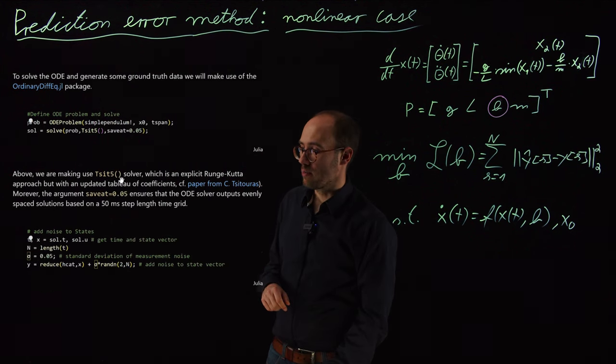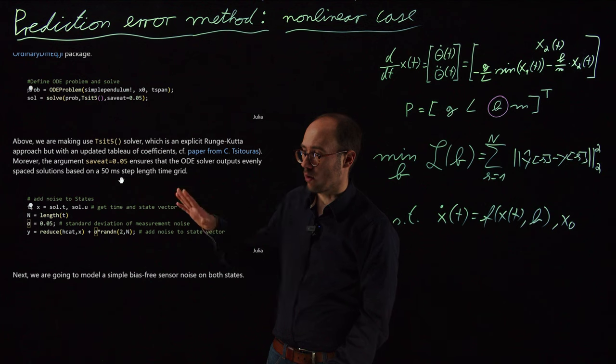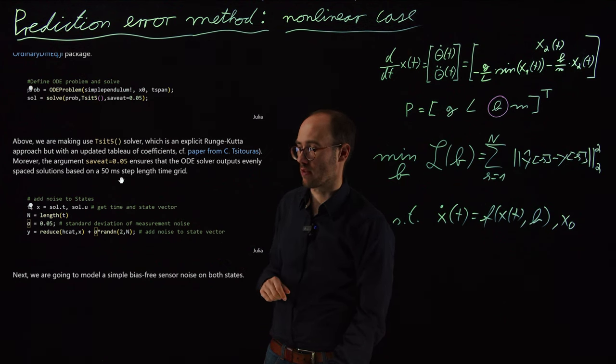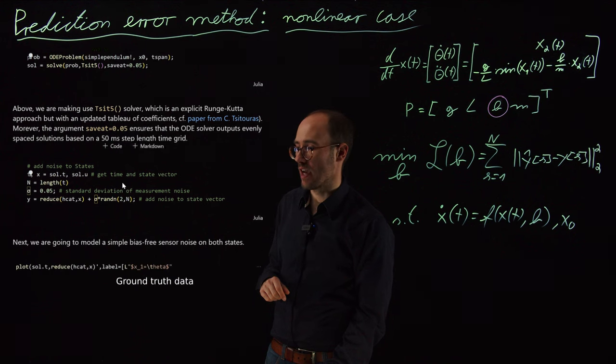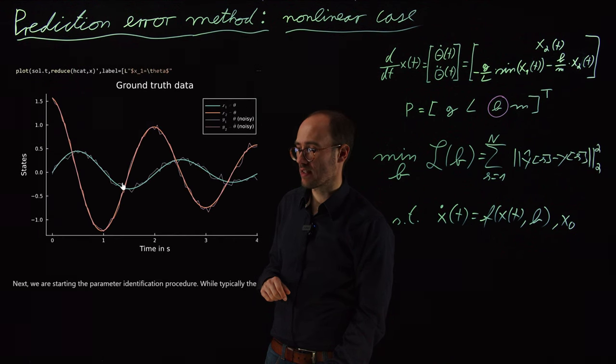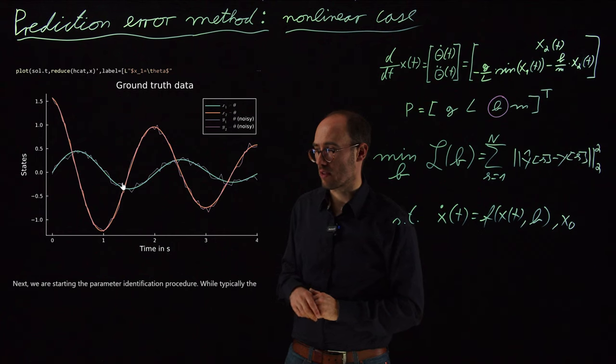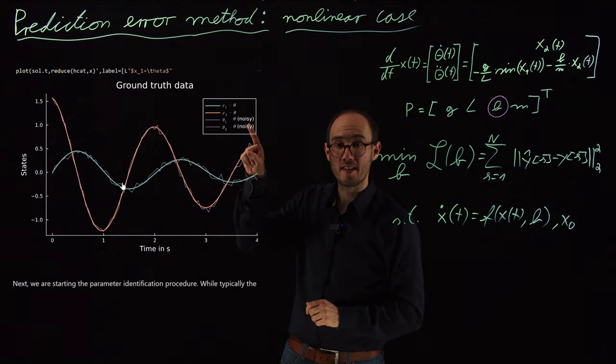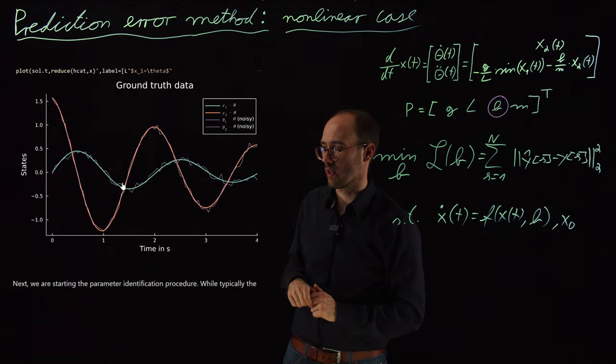In order to mimic real-world data, we also add some measurement noise, just standard additive measurement noise without any bias. We can then visualize our ground truth data, especially here the noisy data with the special noise addition.